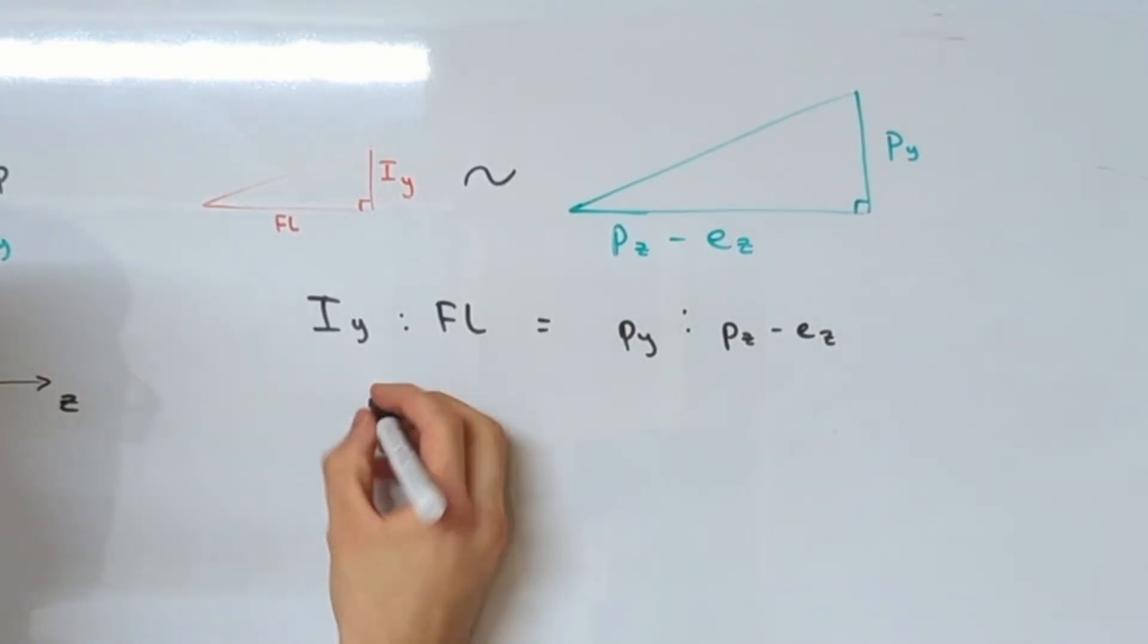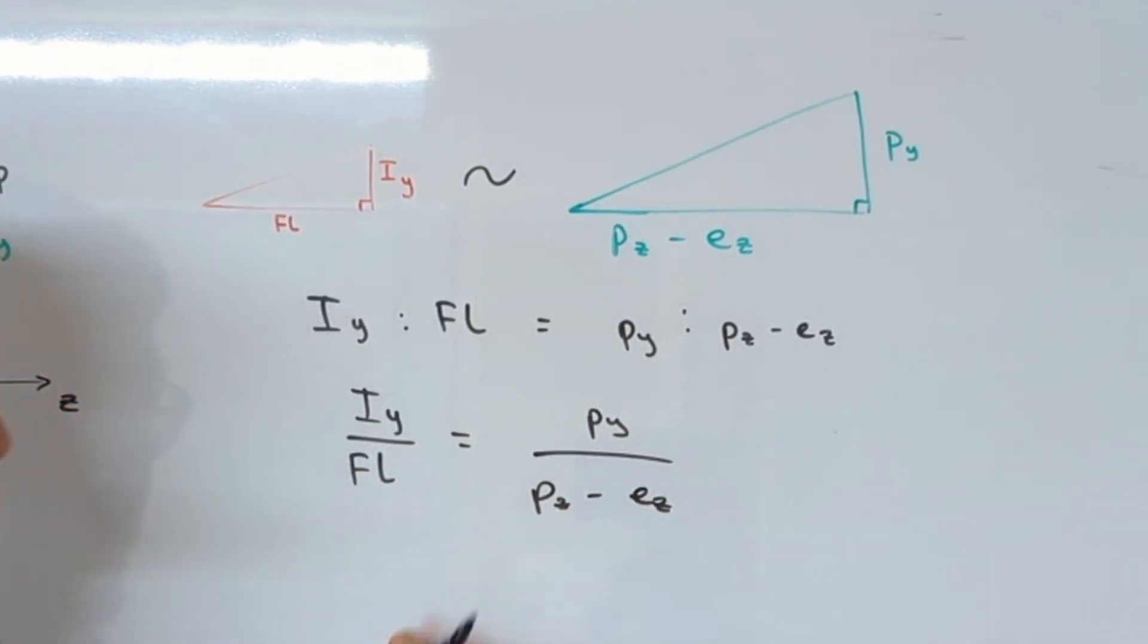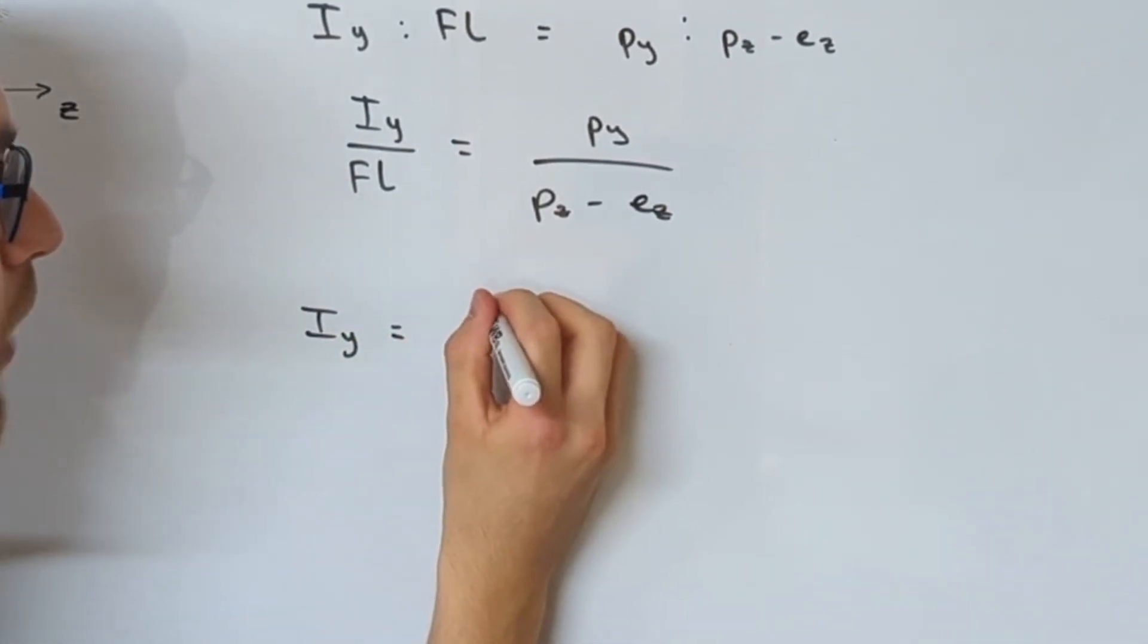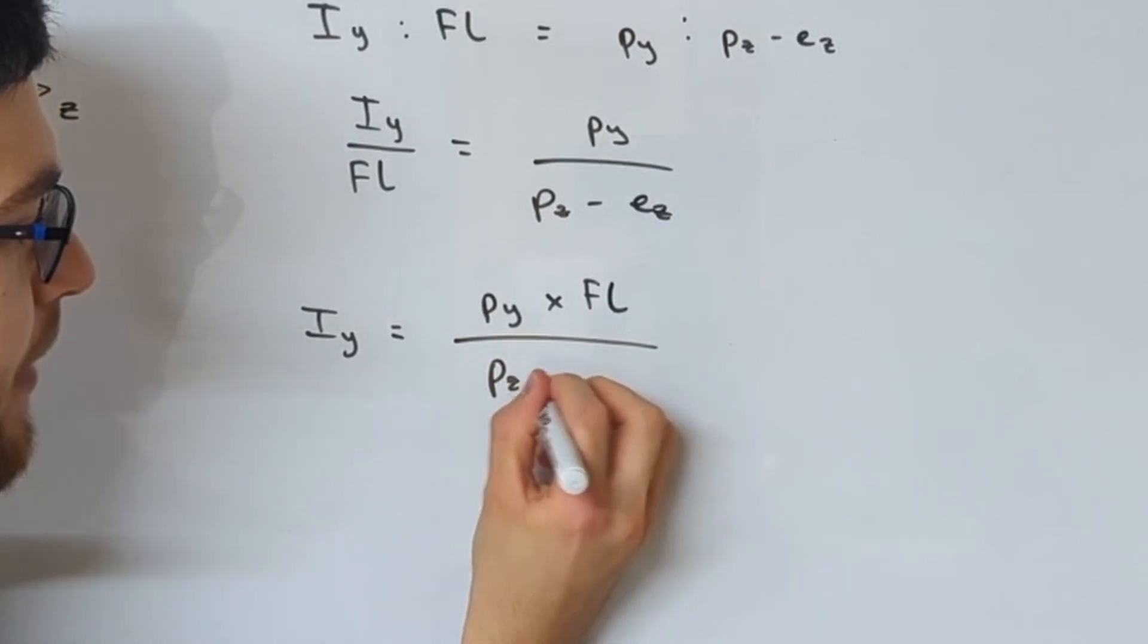So to solve a ratio, we're going to turn it into a fraction: IY over FL equals PY over PZ minus EZ, and now we can multiply by FL to get IY on its own. So we get IY is equal to PY times FL over PZ minus EZ.